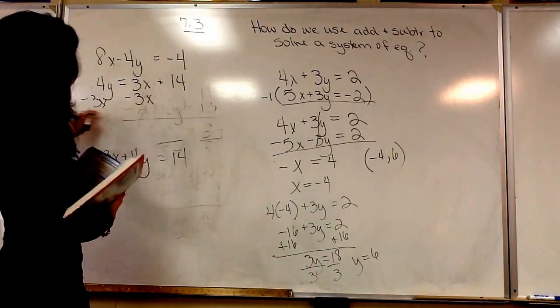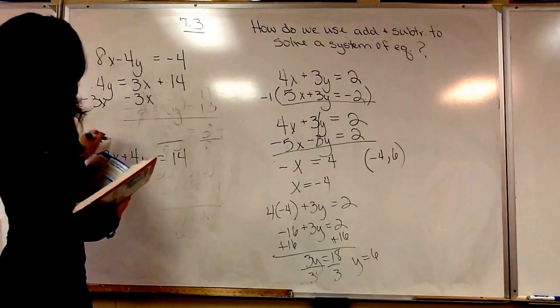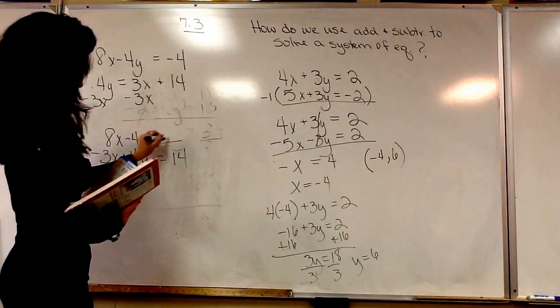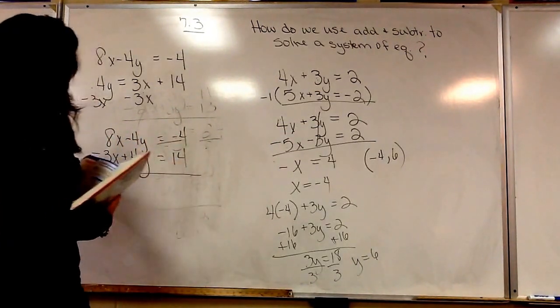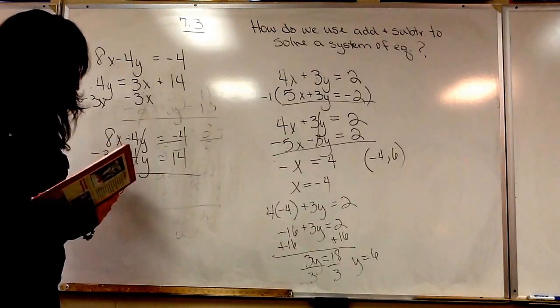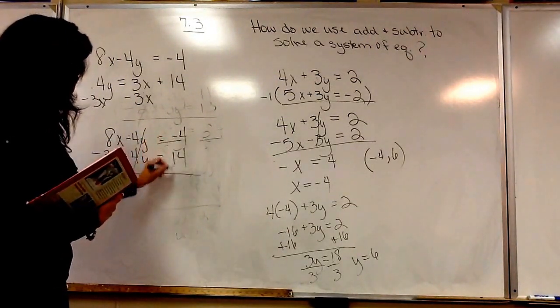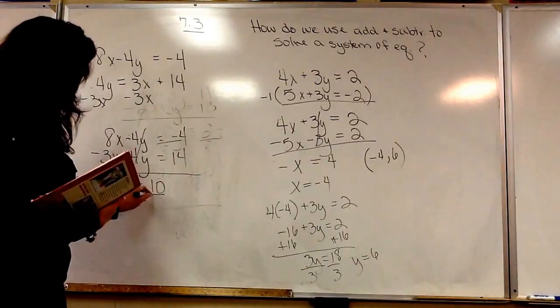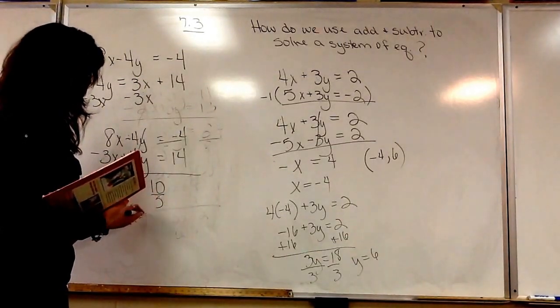So what we're going to have is negative 3x plus 4y equals positive 14. So all I did is brought the x over here with y. Now I'm going to bring down my other equation, 8x minus 4y equals negative 4. Now we have a negative and positive 4y, so those will just cancel. Bring down your 5x. Negative 4 plus 14, that would be 10. Divide everything by 5, and x equals 2.